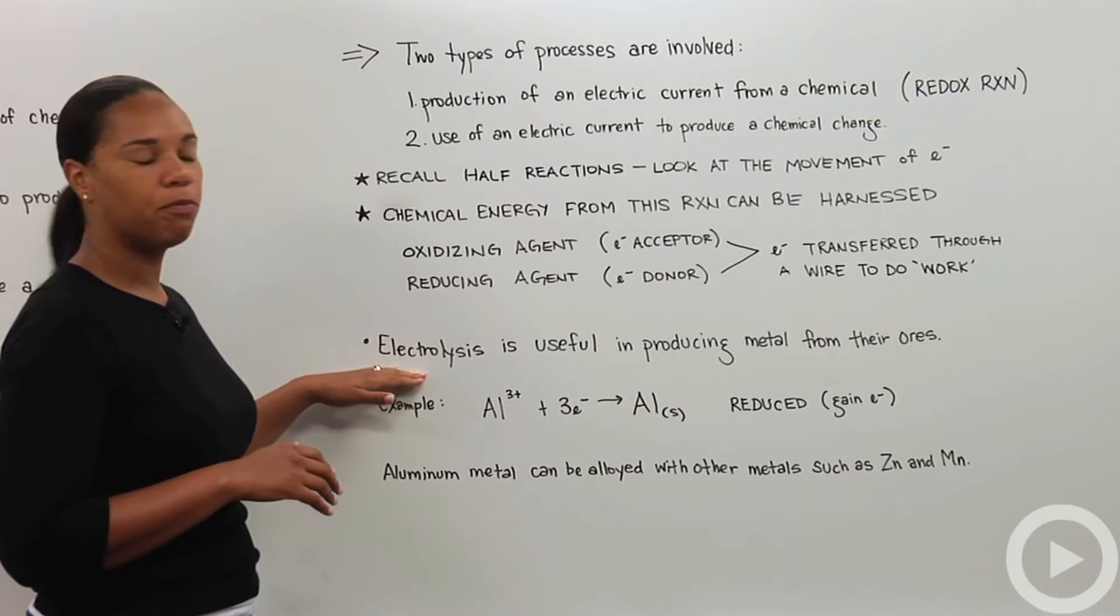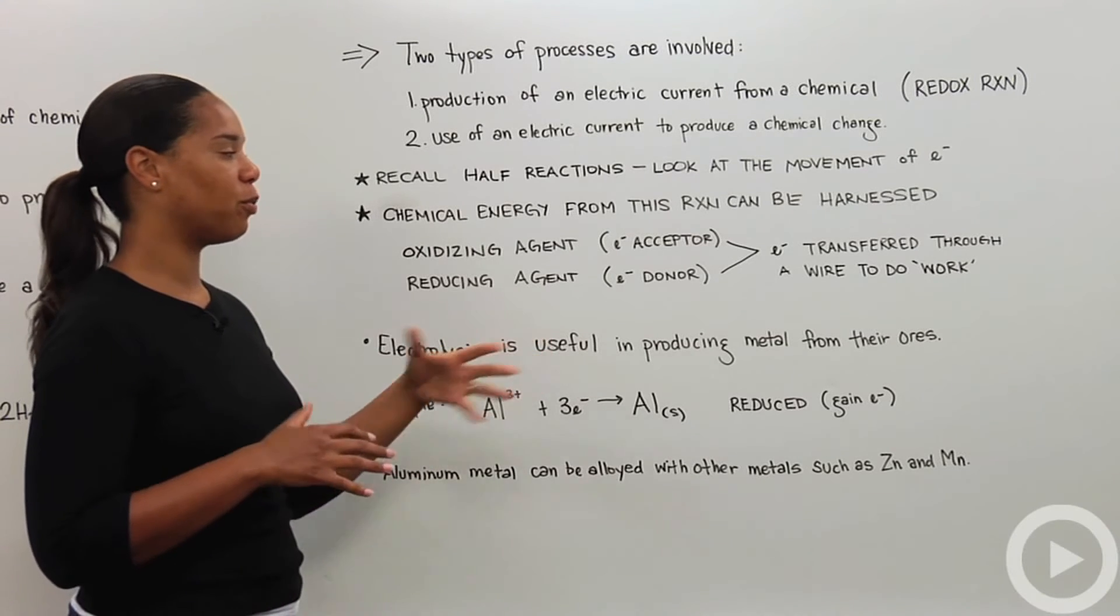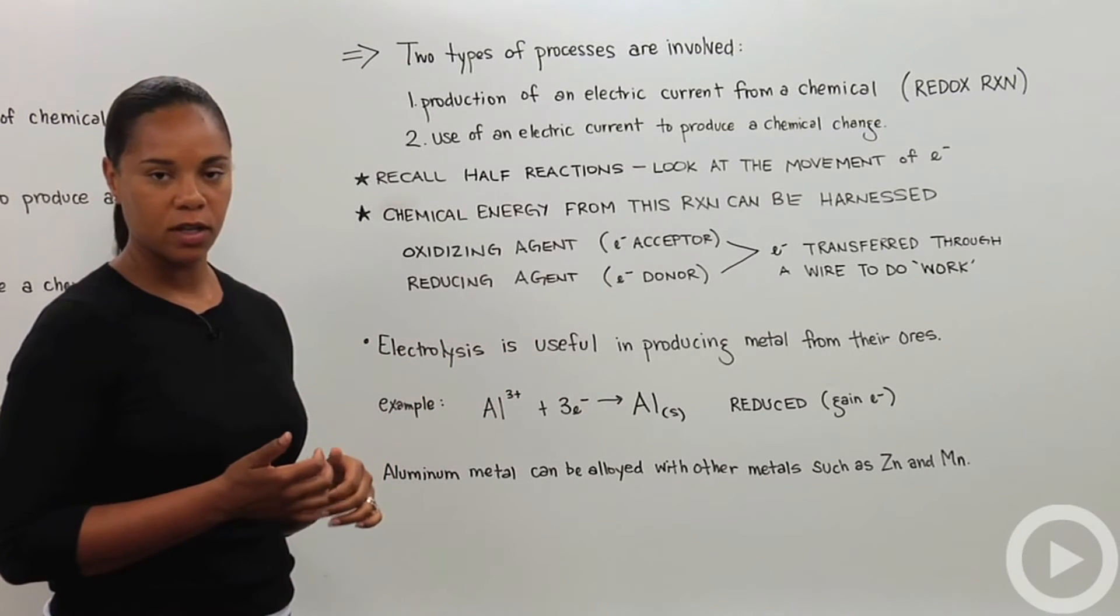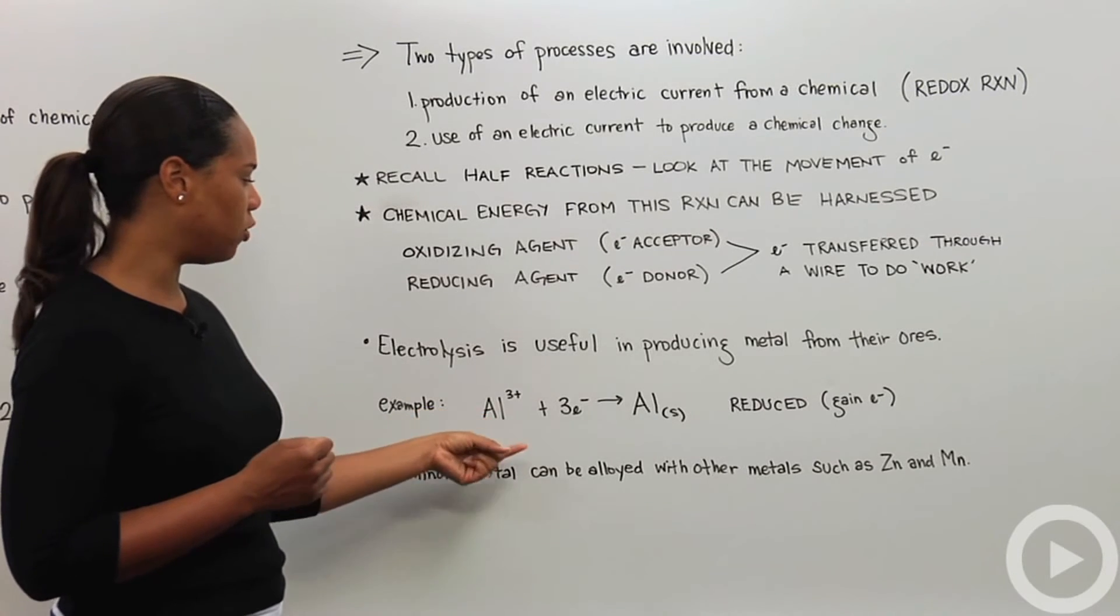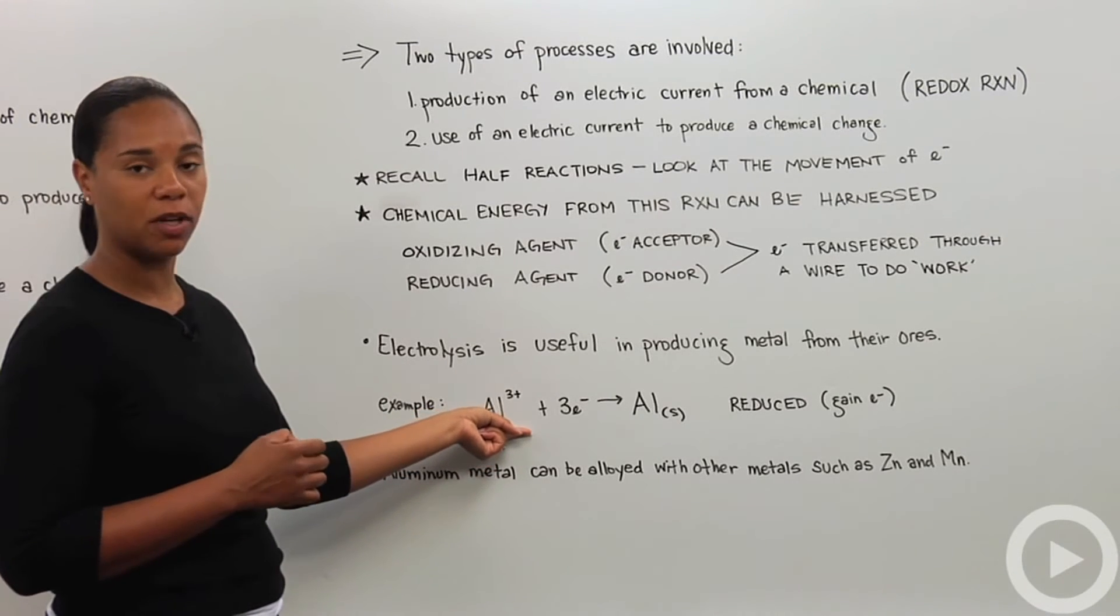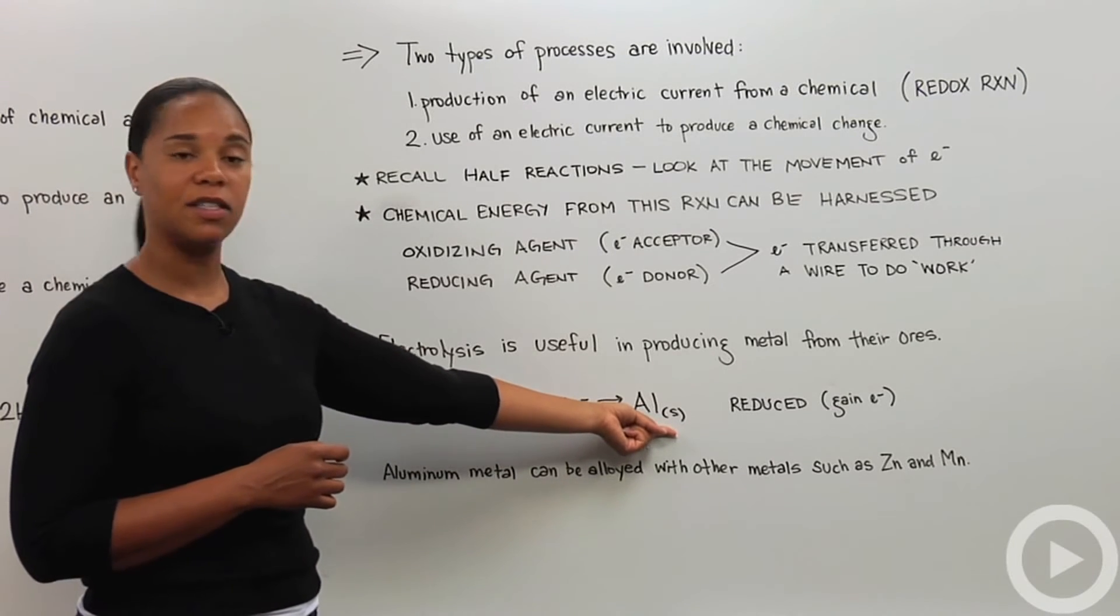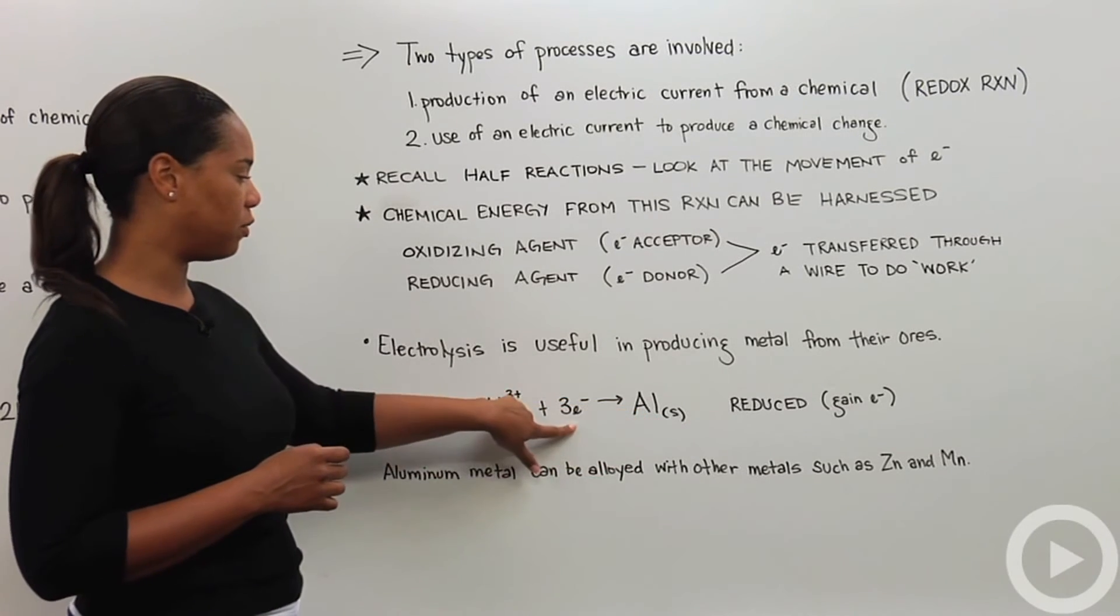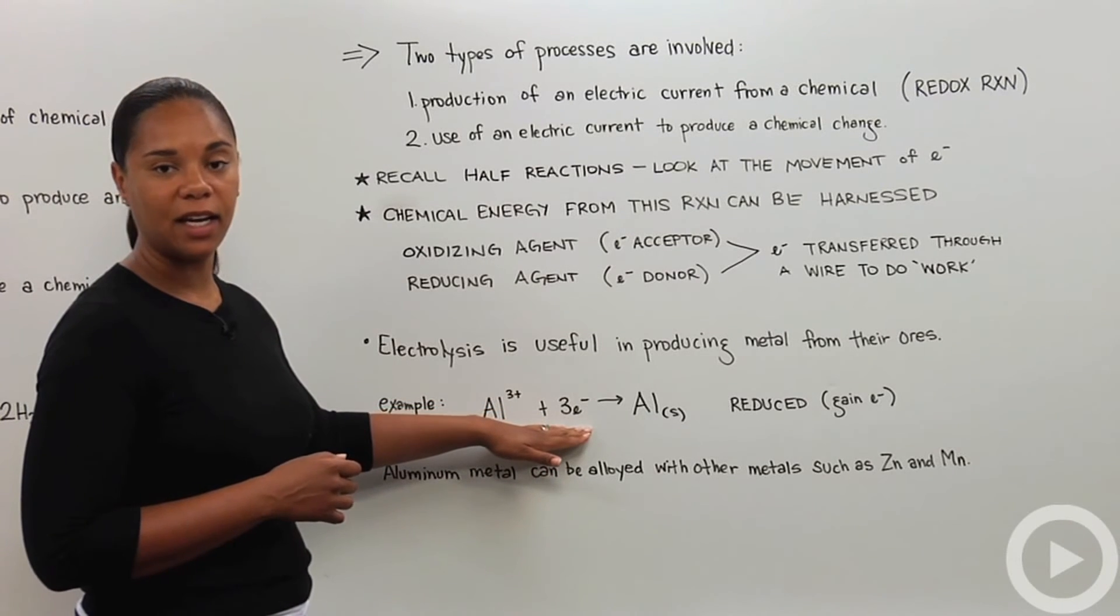A basic application of electrolysis that happens in everyday life is producing metal from their ores. One of the most common is aluminum. You can take aluminum ions with a three plus charge, Al³⁺ + 3e⁻ → Al, and they'll be reduced to get an aluminum solid. I wrote the electrons on this side because it's being reduced, which means it's gaining electrons.